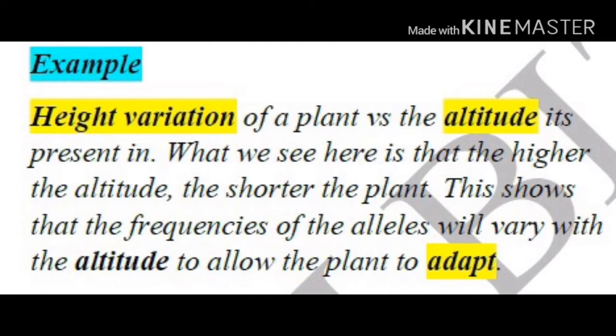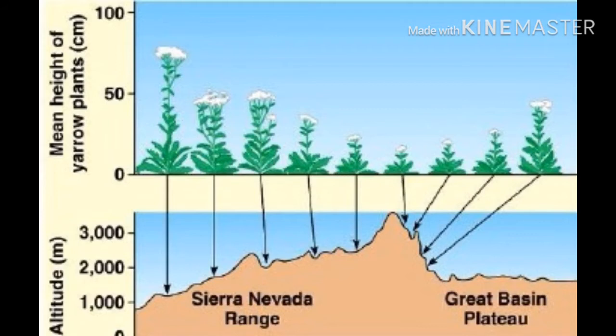The height variation of a plant versus the altitude it is present in — essentially what we see here is that the higher the altitude, the shorter the plant. This is going to show the differences in the frequencies of the alleles the higher the altitude we go. These changes actually occur because of the adaptations, the adaptive capacity of the plant to its altitude.